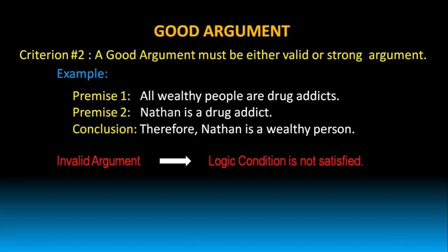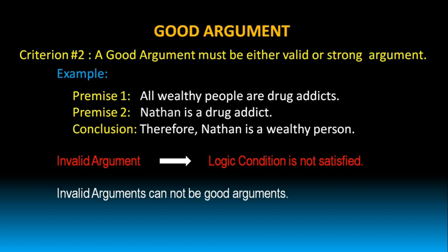This argument is an invalid argument because the logic condition is not satisfied. The conclusion cannot be inferred from the given two premises. Premise 1 says all wealthy people are drug addicts, so it cannot lead to the conclusion that Nathan is a wealthy person just because he is a drug addict. That is why this argument is an invalid argument, and invalid arguments cannot be good arguments.